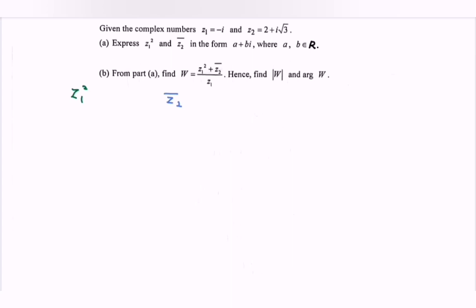Referring to z₁ squared, in this case we have negative i bracket squared. If we expand, we will have i squared. As a conclusion, z₁ squared is equal to negative 1.